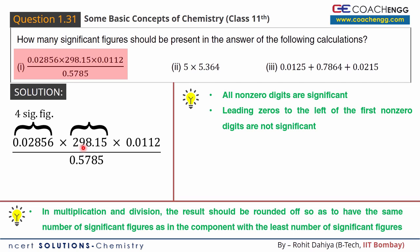The next number is 298.15. Here, all the digits are non-zero, so they are all significant — giving us 5 significant figures. Moving to the third quantity, the non-zero digits are 3, 1, 1, and 2. The leading zeros before the first non-zero digit are not counted as significant figures. So this term has 3 significant figures.